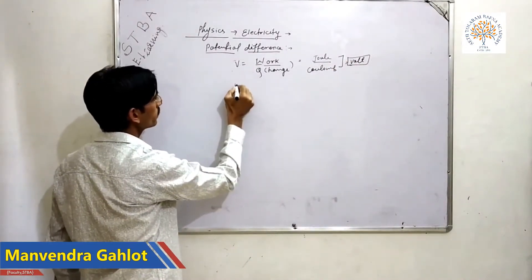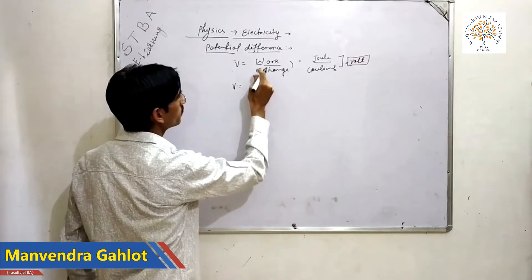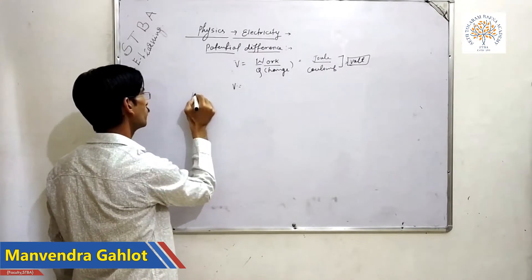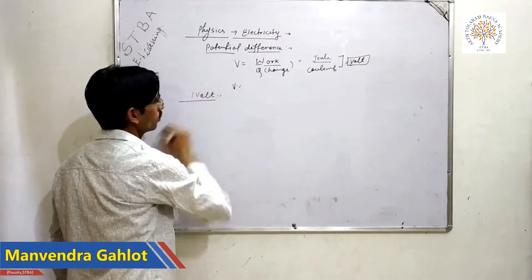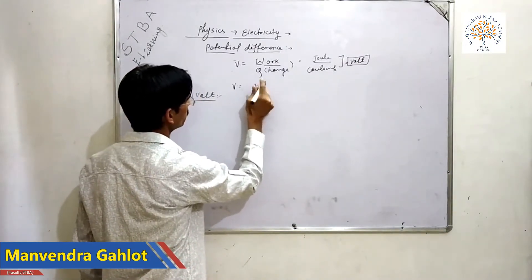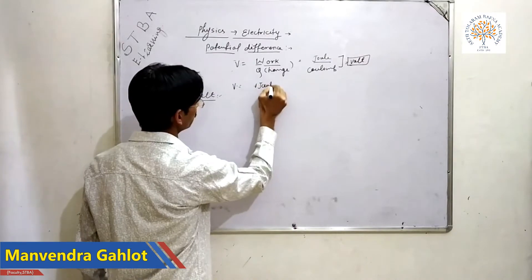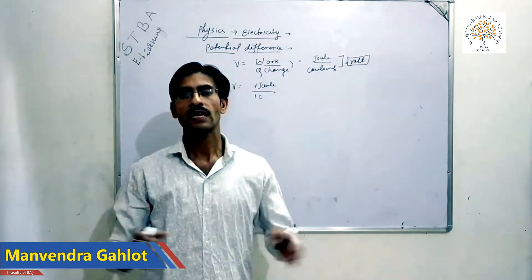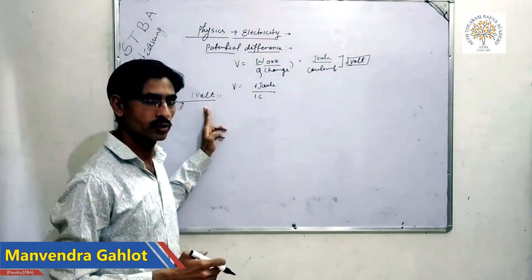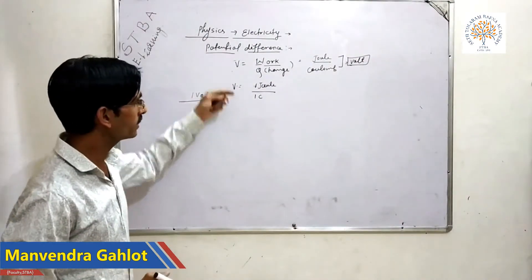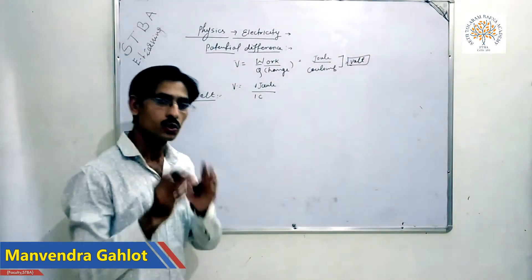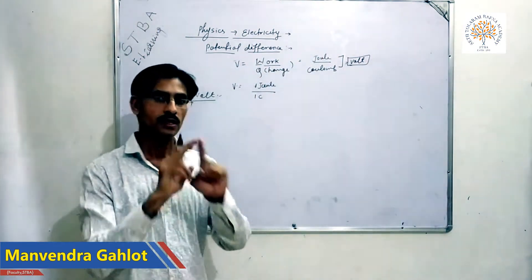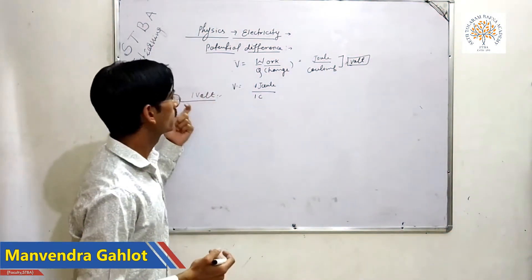So V equals W upon Q, Joule upon Coulomb, and Volt. Now, if we define 1 Volt: when 1 Joule of work is done to carry 1 Coulomb charge from one point to another point in an electric field, we call this 1 Volt.